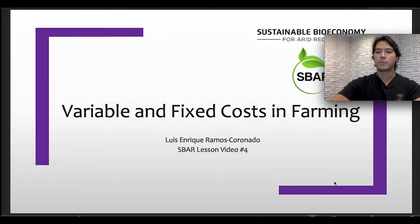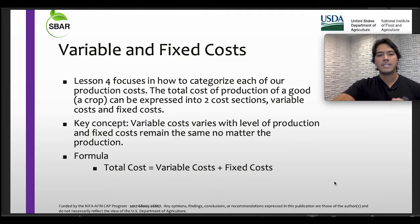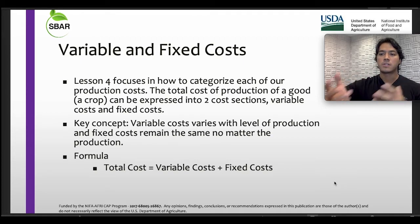The SBAR lesson video number 4 will be about variable and fixed costs in farming. This lesson focuses on how to categorize each of our production costs. The total cost of production of a good, in this case a crop, can be expressed into two sections: variable costs and fixed costs.